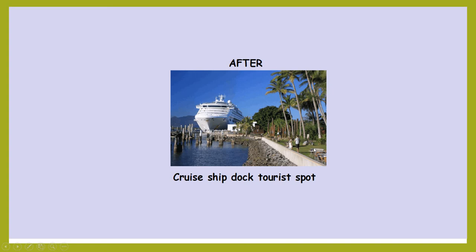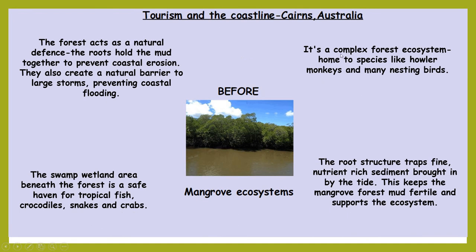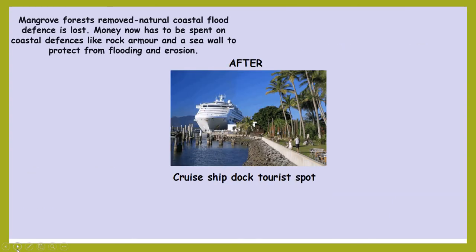There's not a mangrove in sight — you've lost the ecosystem we were talking about. You've also lost the natural coastal defence, so you're now going to have to spend money on coastal defences. This is riprap, or rock armour — lots of boulders put in place to break up the wave energy, which the roots of the mangroves would have done perfectly fine. There's also a seawall made of concrete, and when you make concrete it releases carbon dioxide, which adds to climate change, which causes sea level rise, which is going to destroy your nice tourist spot anyway.